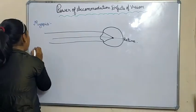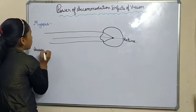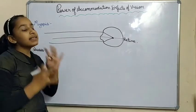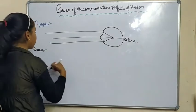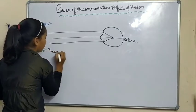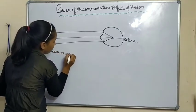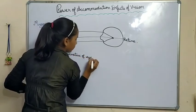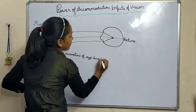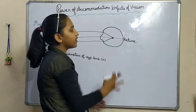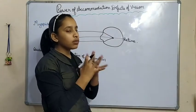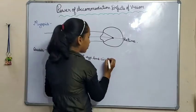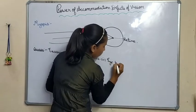Now we will see the causes of myopia. The causes of myopia are: first, excessive curvature of the eye lens; and second, the eyeball is too big — meaning the eyeball is not the perfect size, it is too large.